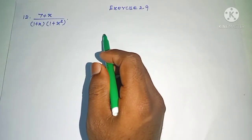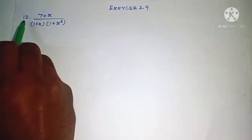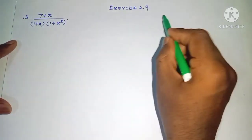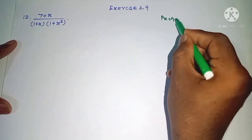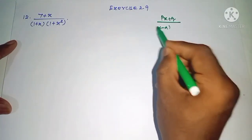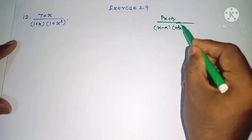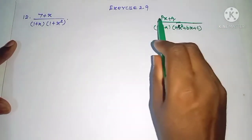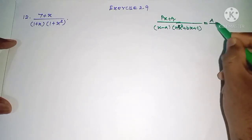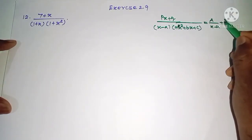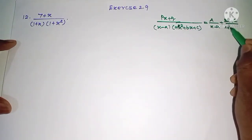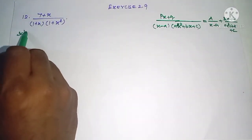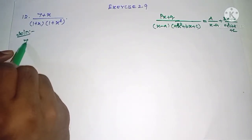Hi students, this is Selama Max Tuition, 11th standard. Question number 12: (7 + x) divided by (1 + x)(1 + x²). We go to the general form px plus q divided by x minus a into ax² plus bx plus c. In the quadratic factor ax² plus bx plus c, the partial fraction is set up accordingly.